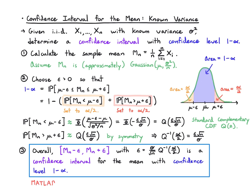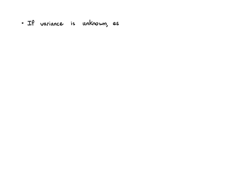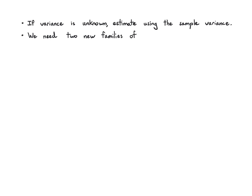In MATLAB, the Q inverse function can be obtained by calling qfuncinv of z. What if we don't know the variance? Then we need to also estimate it from the data using the sample variance. To do the analysis, we need two new families of random variables.